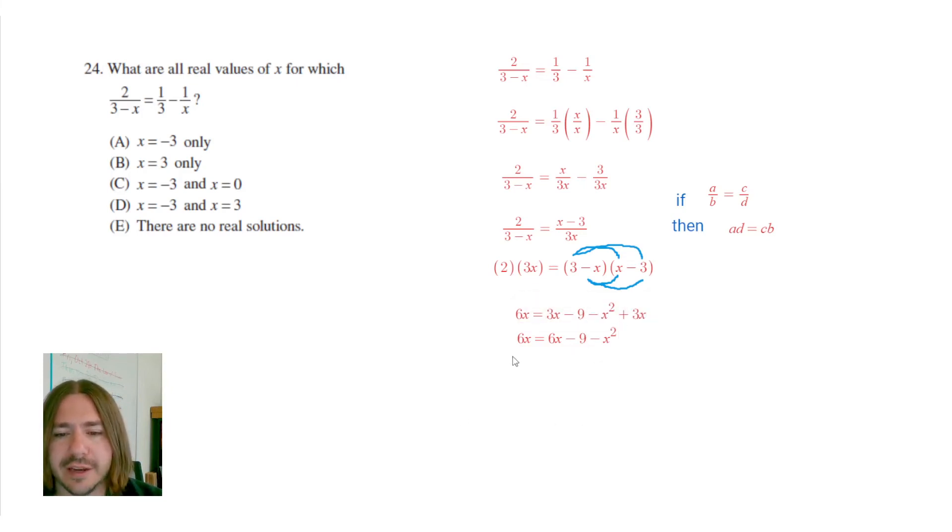So I'm going to add x squared to both sides here. So this x squared, if I add to both sides, is going to pop up over here. And then I'm going to add 9 to both sides. So that plus 9 is going to go over here. And then I'm going to subtract 6x from both sides. And actually what happens here is both these 6xs are going to cancel each other out. And so I'm left with x squared plus 9 equals 0.